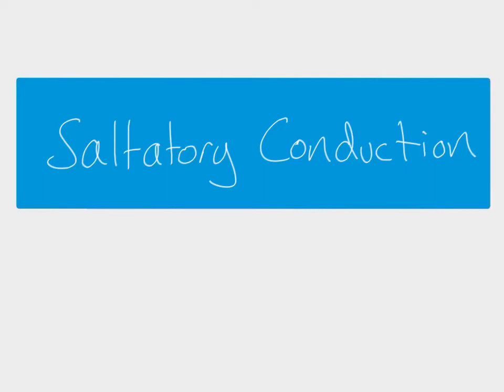Hi everybody. In this video we are looking at saltatory conduction, which is the way that nerve impulses travel down an axon which is myelinated. We're going to start off just thinking about how the impulse travels without worrying about the myelin, and then we'll add the myelin in at the end.